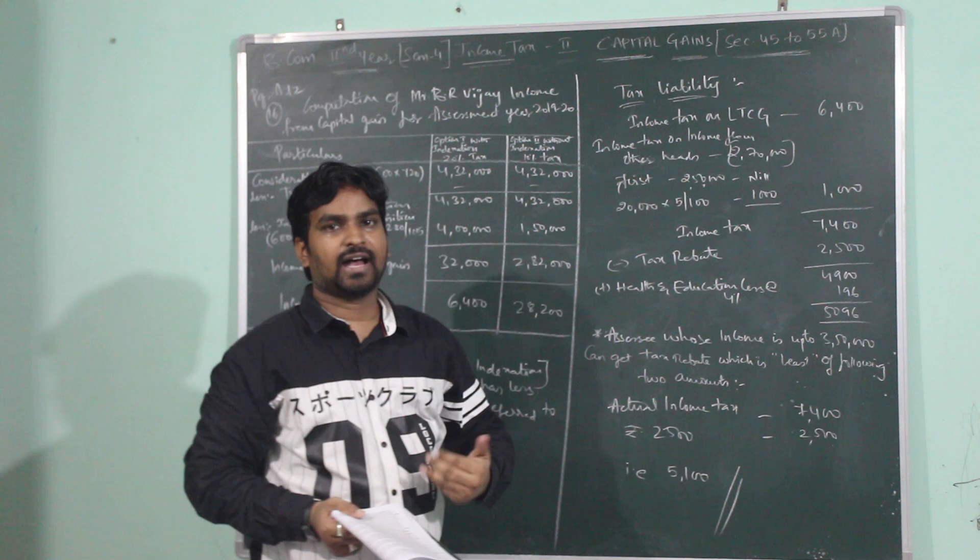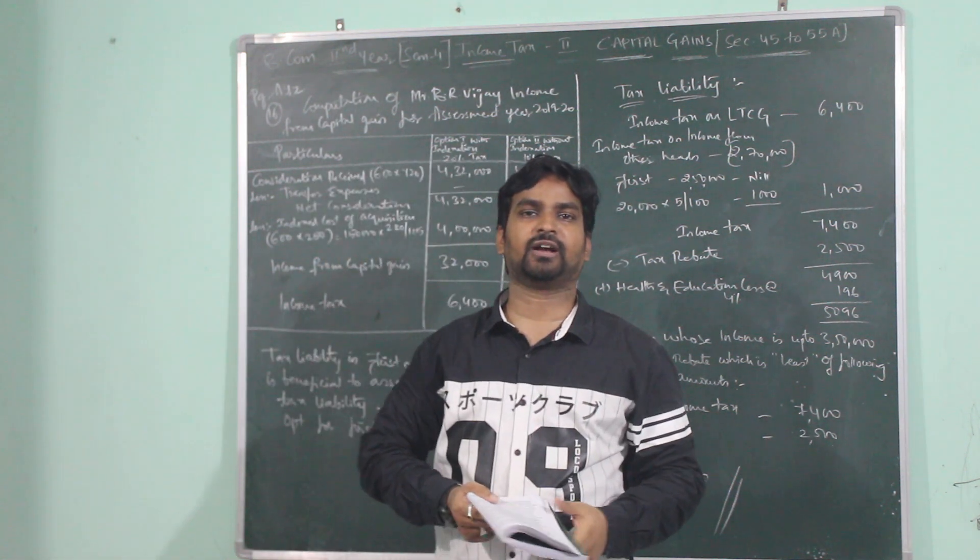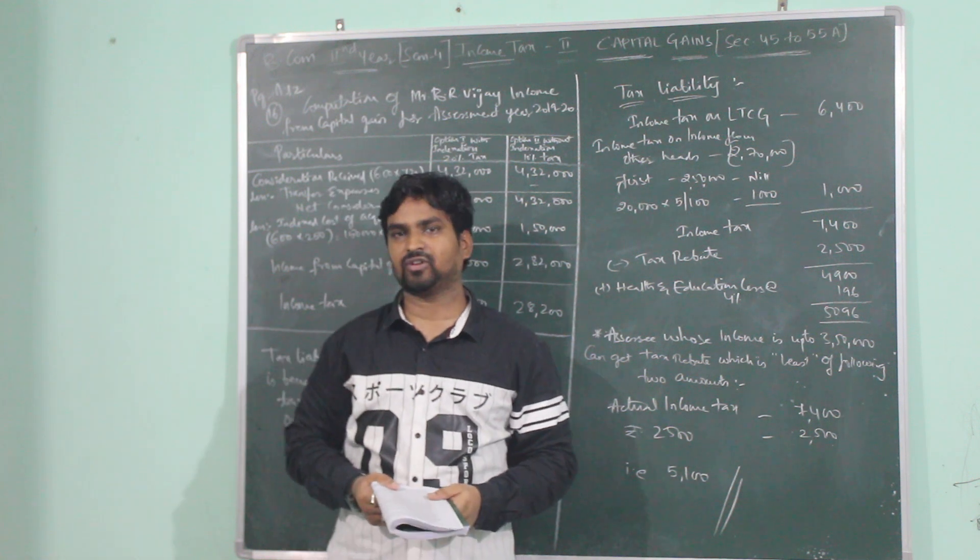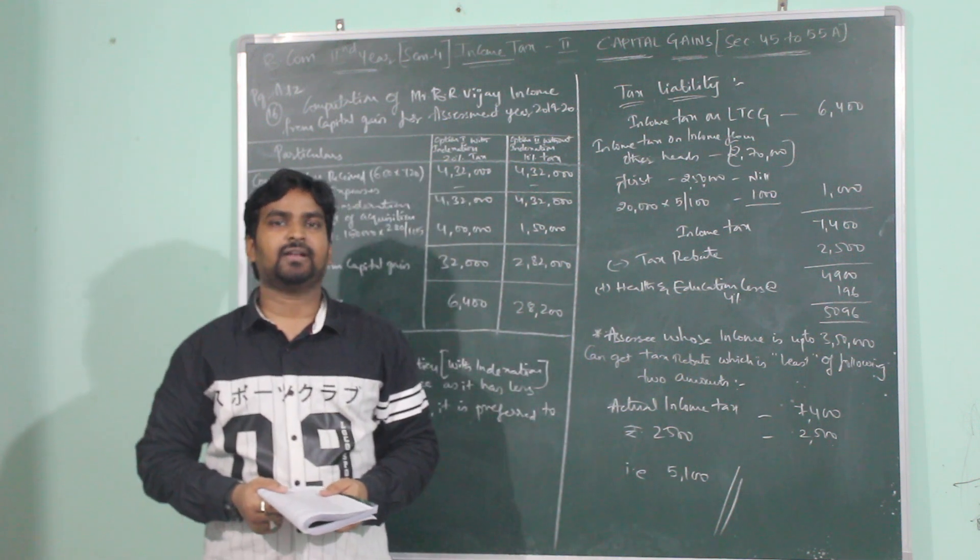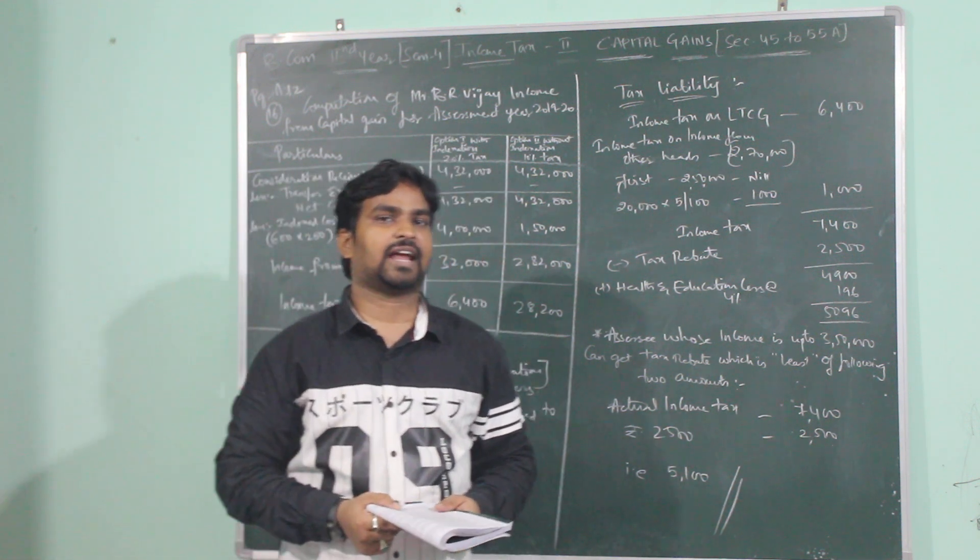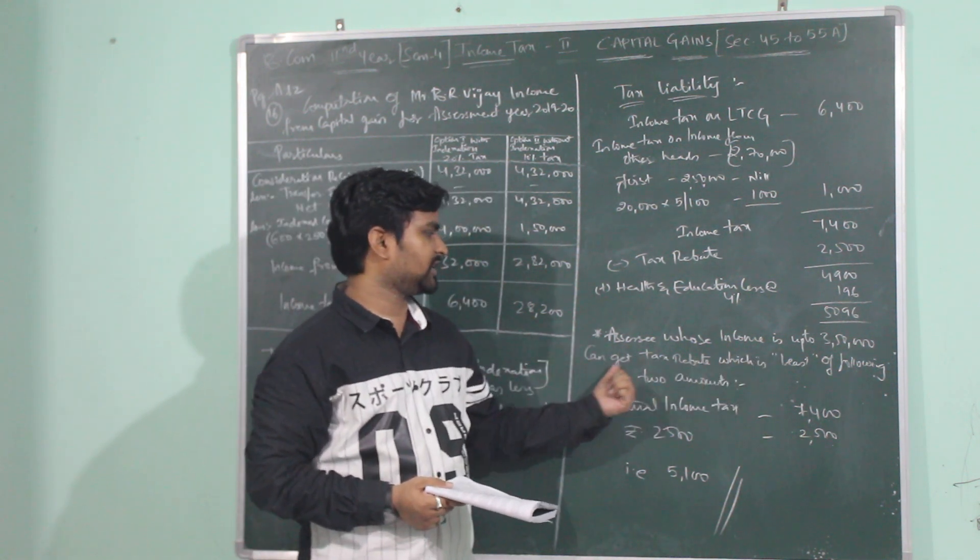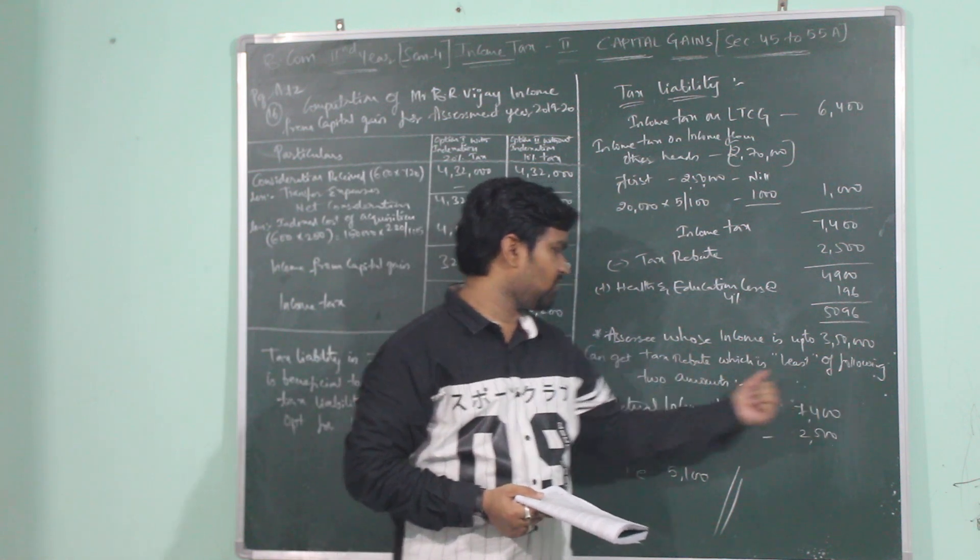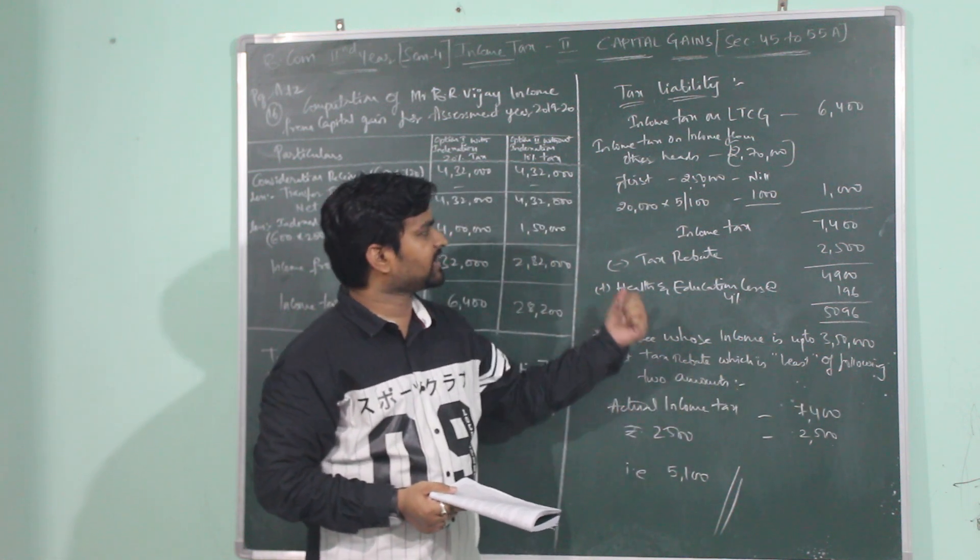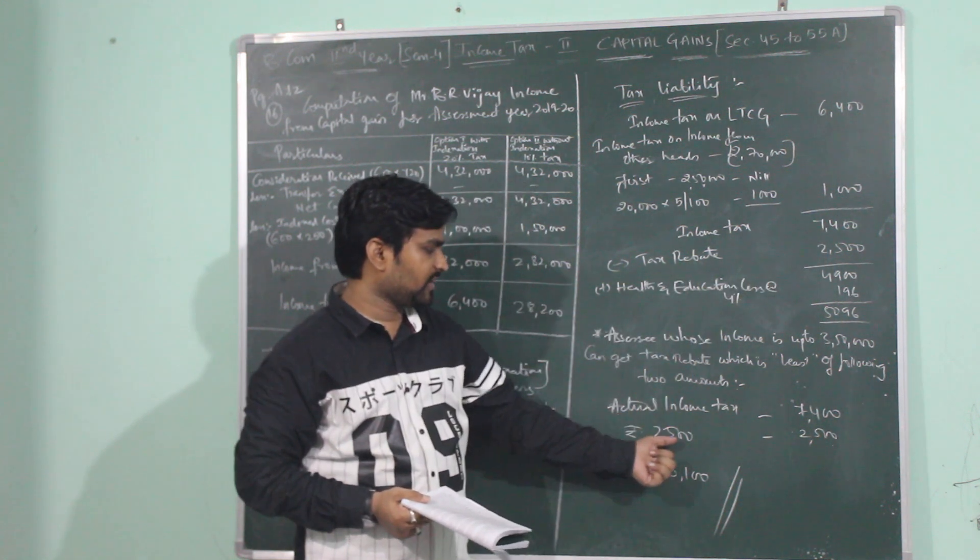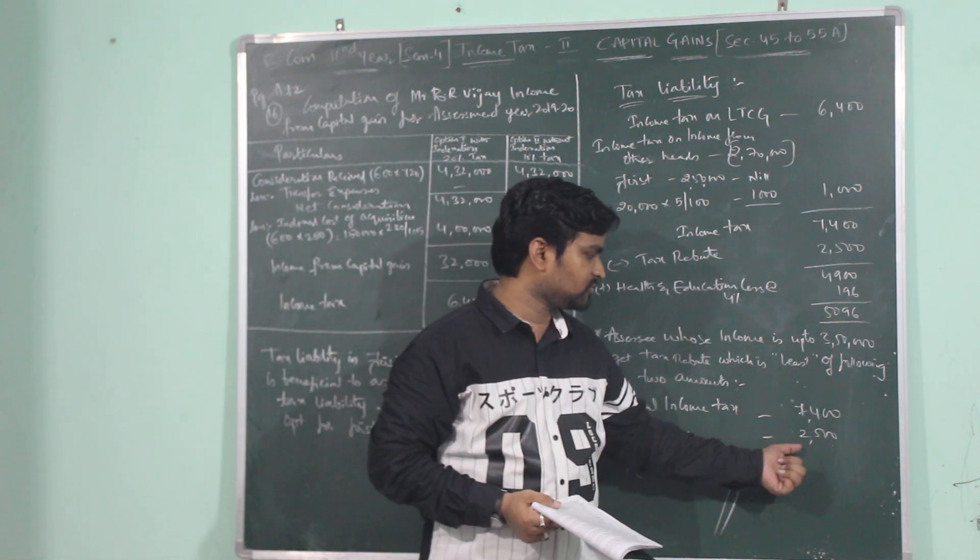When the assessor has income up to 3,50,000, he can avail tax rebate which will be calculated as least of the following 2: actual income tax is 7,400 or 2,500. The least amount is 2,500.